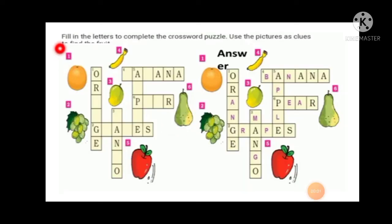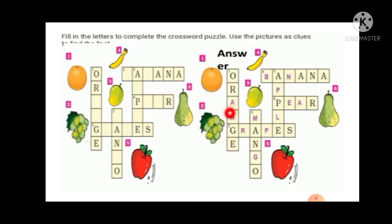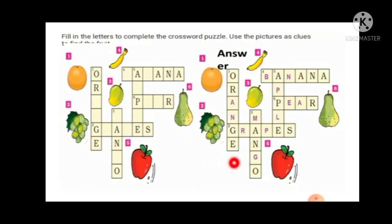Now let's do the textbook exercise. This type of exercise is important. Here a picture is given and you have to write the name of the fruit in the box. First: orange. Second: grape. Third: mango. Fourth: banana. Fifth: apple. Sixth: pear. And there is a crossword where you have to write the letters to complete the fruit names. Remember all the fruit names.